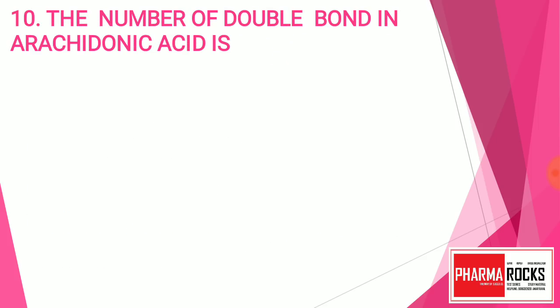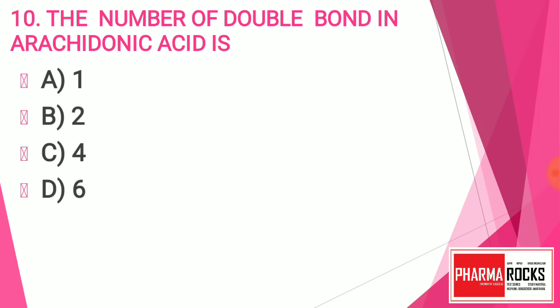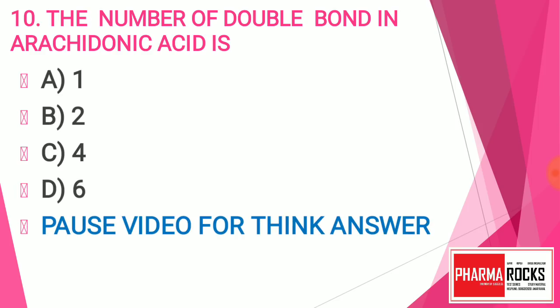Question number ten: The number of double bonds in arachidonic acid — you have to find out the number of double bonds. Option A: 1, Option B: 2, Option C: 4, Option D: 6. The answer is C — 4. A total of 4 double bonds are present in arachidonic acid.